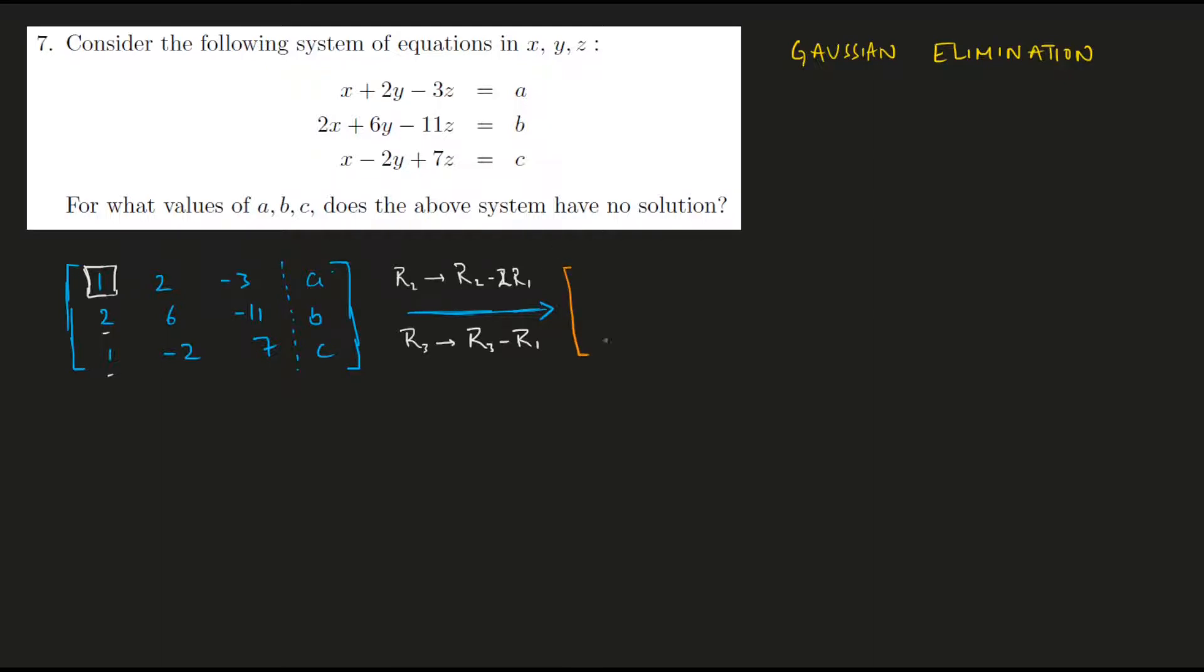So this will give me the following system: 1, 2, minus 3, A. The first row remains the same. In the second row I am going to subtract two times the first row from it. So this would turn out to be 0, this would be 2, and this would be minus 5, and this is just B minus 2A.